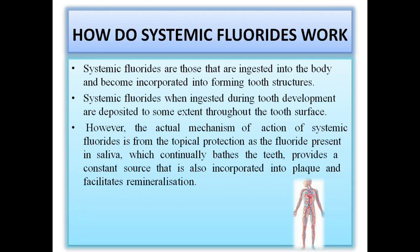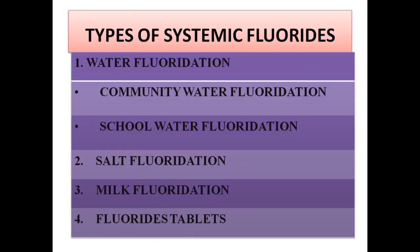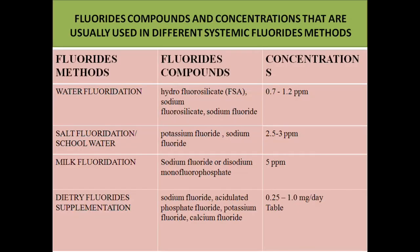The various types of systemic fluorides are: water fluoridation, salt, milk, and fluoride tablets. In water fluoridation, the concentration is 1 ppm. In salt or school water fluoridation it ranges from 2–3 ppm, and in milk fluoridation it is about 5 ppm, because the amount and duration of consumption is less compared to community water fluoridation. There are also other supplements like fluoride tablets, APF, sodium fluoride, and other preparations.